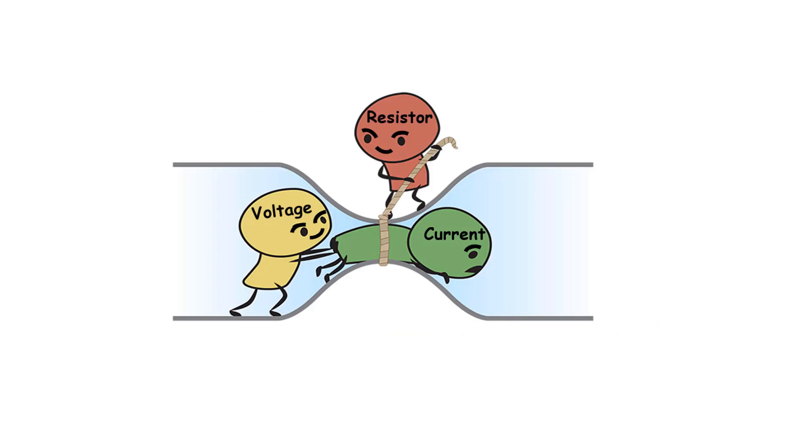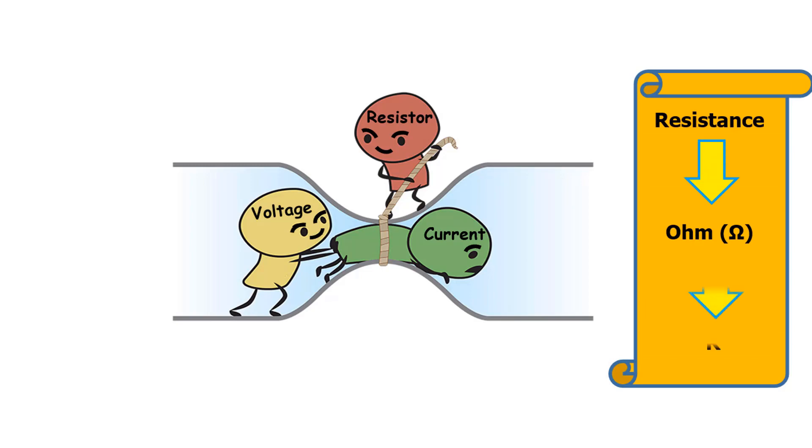Resistance is defined as the difficulty shown against current. A resistor is a circuit element that makes it difficult for electrons to pass. Its unit is ohm. Resistors are indicated by the letter R in circuit. Each circuit element has a certain resistance. By simply adding up all the resistances in series circuits, we find the total resistance of the circuit.